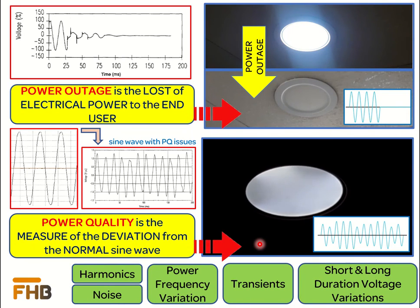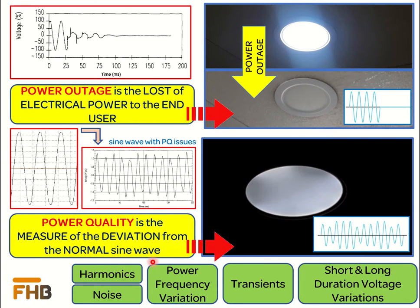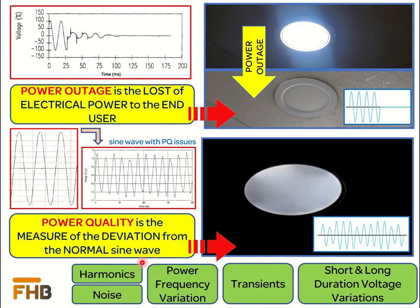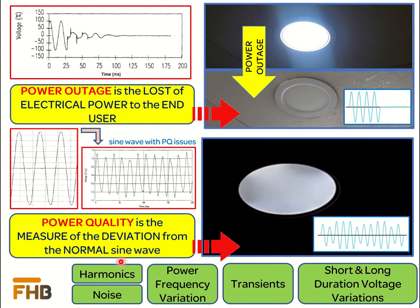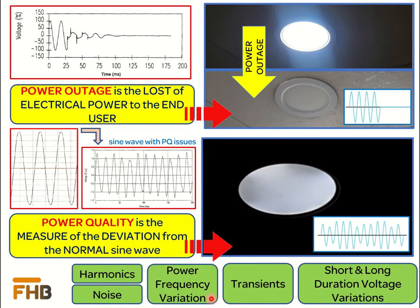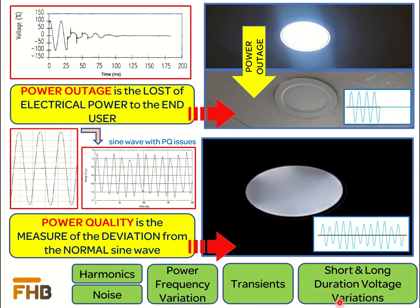Under the definition of measurement of power quality, we can refer to a wide variety of phenomena that characterize the voltage and current at a given time and at a given location in the power system. These phenomena can be waveform distortion due to the presence of harmonics and noise, power frequency variation which is directly related to the speed of the generators, any transient in the power system such as due to lightning effect, or it can also be different short and long duration effects of supplied voltage.